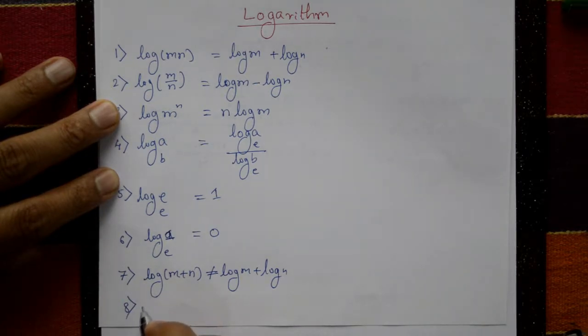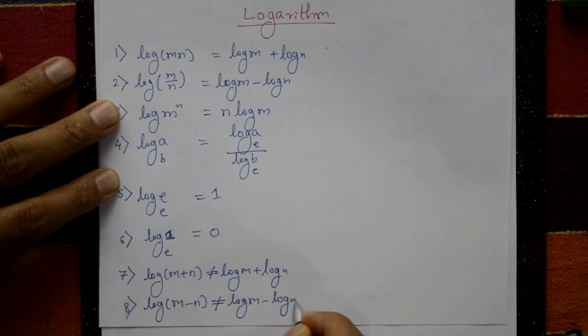Eighth one: log of m minus n. This is not equal to log m minus log n.